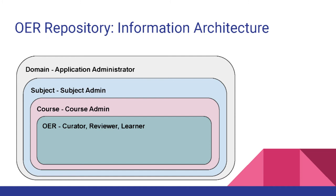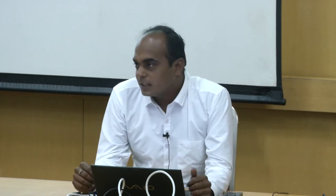This diagram represents the information architecture of the OER repository. Domain means say a branch — like engineering is a branch, or arts, science, medical, etc. These are the domains. Then subjects — if you consider programming as one subject, then inside that there will be courses. And inside a course, there will be OERs.